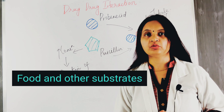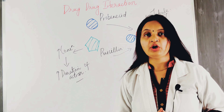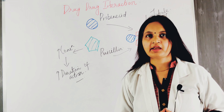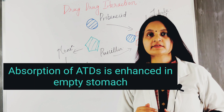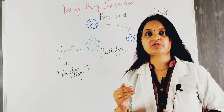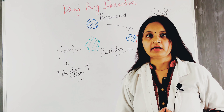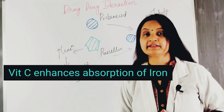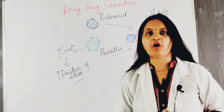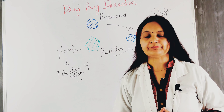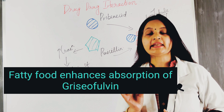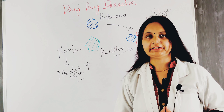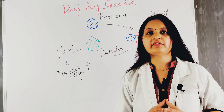The next factor is food and other substrates. Tetracycline strongly binds to calcium and calcium-rich foods such as milk, which inhibits the absorption of tetracycline and reduces its bioavailability. Anti-tubercular drugs taken on an empty stomach show better absorption than when taken with meals. Vitamin C enhances the absorption of iron by keeping it in the ferrous form, thereby increasing its bioavailability. Fatty food enhances the absorption of griseofulvin and increases its bioavailability.